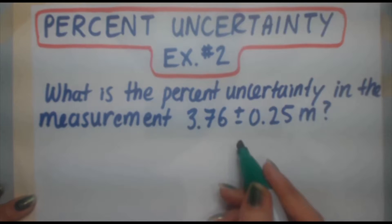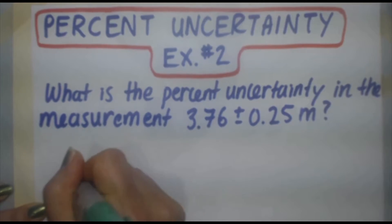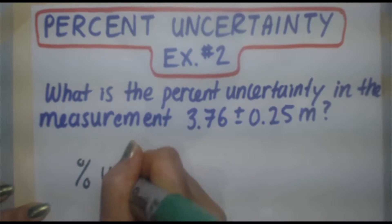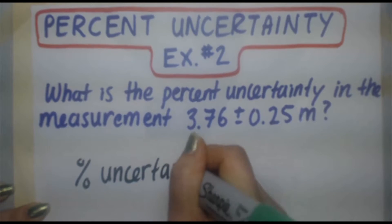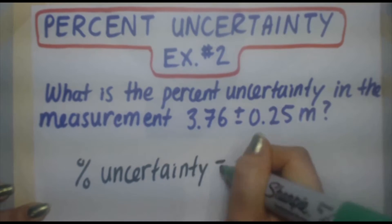So we're going to go ahead and do the same as in example number one. So percent uncertainty equals...